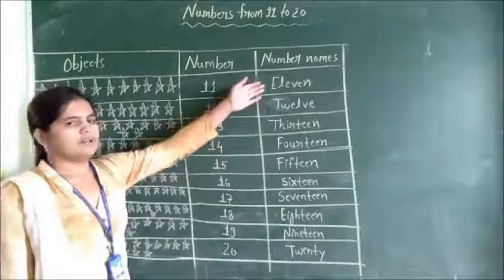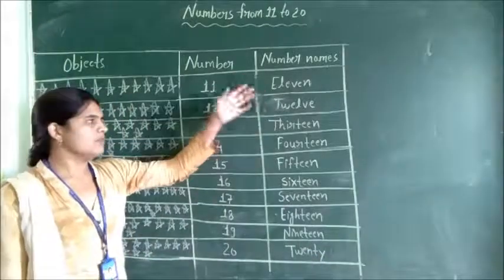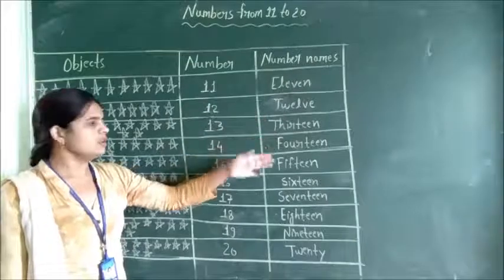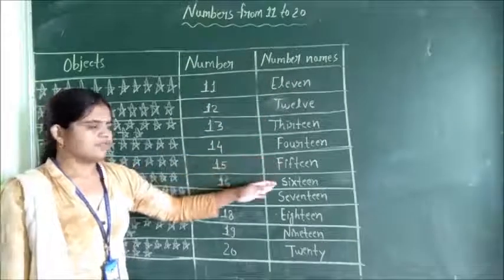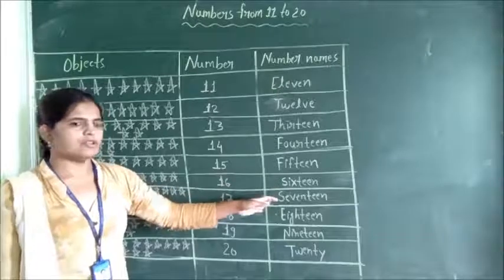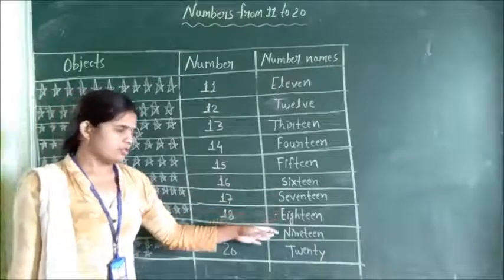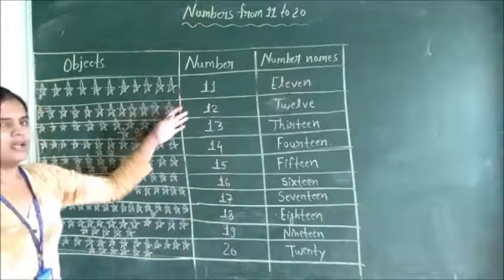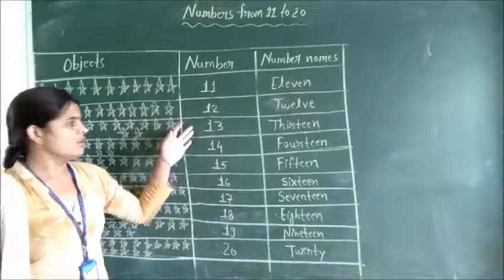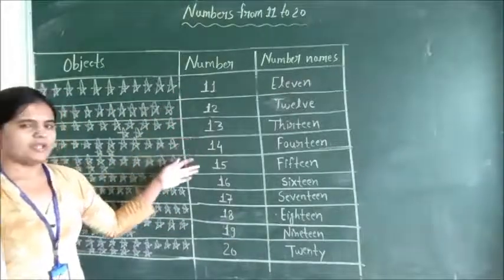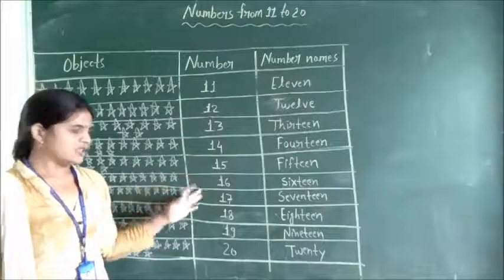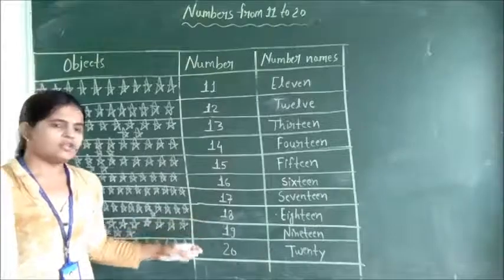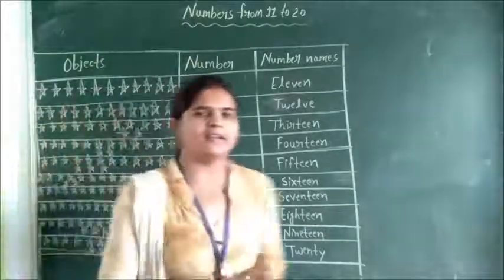Again. Start: 11, 12, 13, 14, 15, 16, 17, 18, 19, 20. Once more: 11, 12, 13, 14, 15, 16, 17, 18, 19, 20. Right!